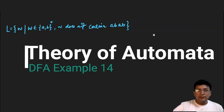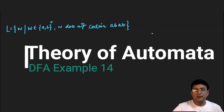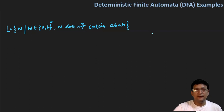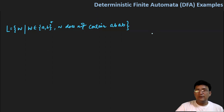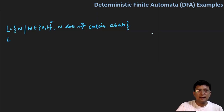Let's take another example and solve it — design a DFA for a language that does not contain 'abab'. With the problem itself, it looks like a difficult one, but we'll try to make it easy by taking the complement of this language.